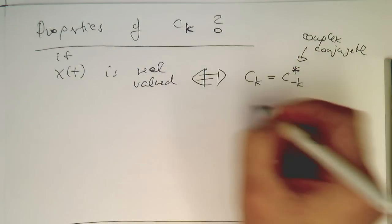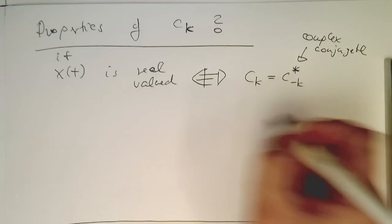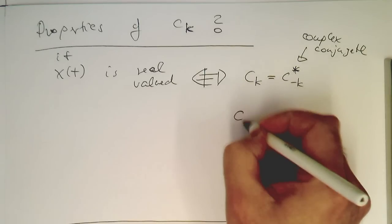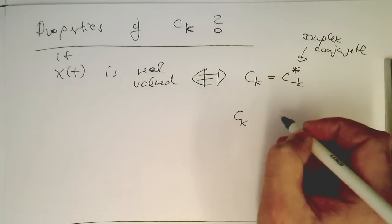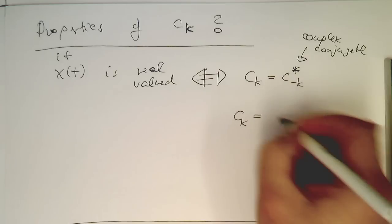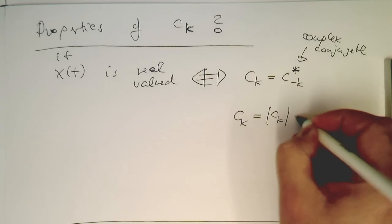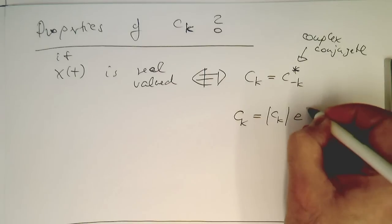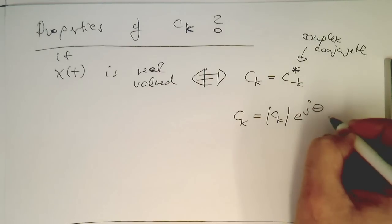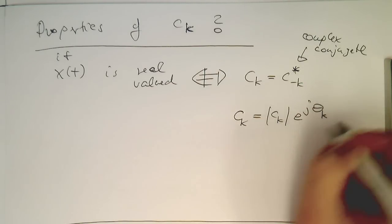Or we can also write this in our phasor description. So that we have ck equals the amplitude of that, or the radius, and we define a phase angle with that, φk. So something like this.